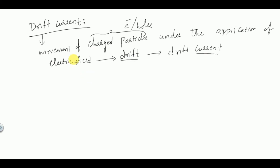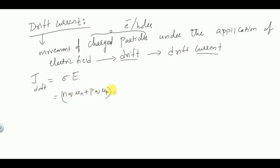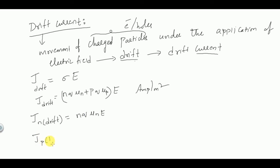Electrons always move towards the positive terminal of the battery and holes move towards the negative terminal in the applied electric field. This motion causes a current called drift current. The drift current density is given by σE. For a semiconductor: J_drift = (nqμ_n + pqμ_p) · E. For electrons specifically: J_n_drift = nqμ_n · E, and for holes: J_p_drift = pqμ_p · E.